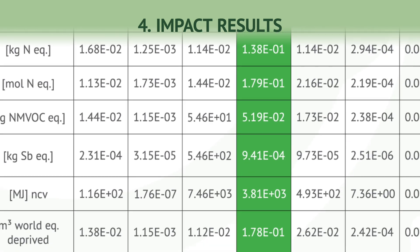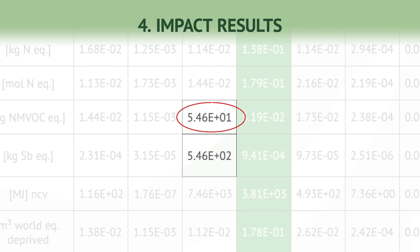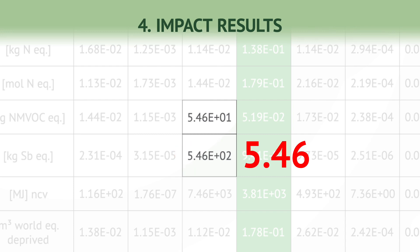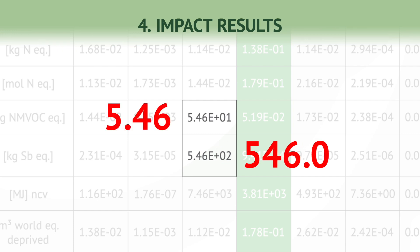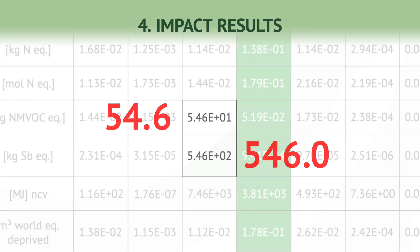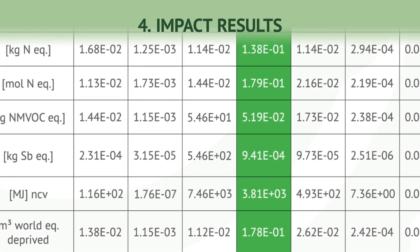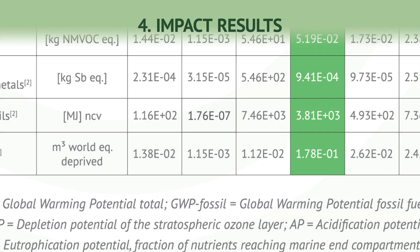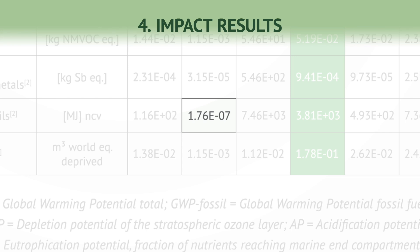Consider the difference between 5.46e+01 and 5.46e+02. The answer is that 5.46e+02, or 546, is 10 times bigger than 5.46e+01, or 54.6. The E+01 and E+02 indicate how many times you need to move the decimal place — if you see a plus, move to the right; if you see a minus, move to the left. So why do EPDs use scientific notation? Simply put, sometimes the numbers involved are either too large or too small to fit in results tables.